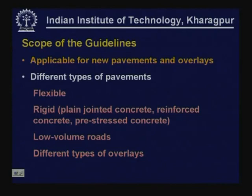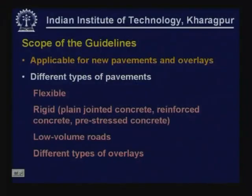AASHTO guidelines represent one single set of guidelines available for all types of pavements: concrete pavements, flexible pavements, different types of flexible pavements and different types of concrete pavements. Types of pavements considered include flexible, rigid — under rigid we have plain jointed concrete, reinforced concrete, and pre-stressed concrete. Guidelines are also available in the 1993 version for low volume roads and different types of overlays for both flexible and concrete pavements.